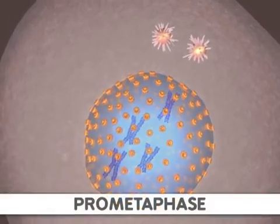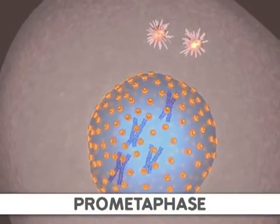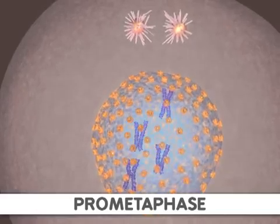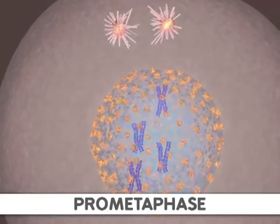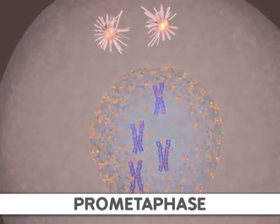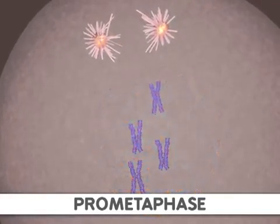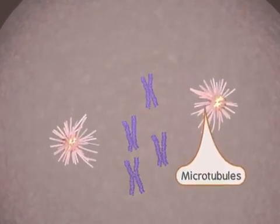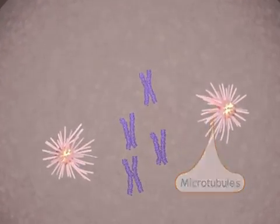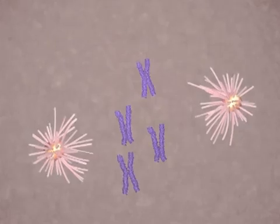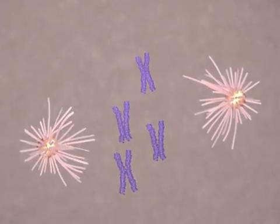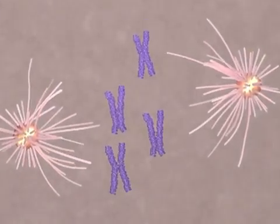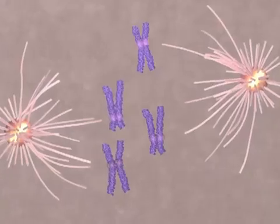Next, prometaphase begins when the nuclear membrane is broken down. At the same time, microtubule strands, or spindle fibers, are growing from the centrosomes. These strands attach to a protein structure called the kinetochore. One kinetochore is attached to the centromere of each sister chromatid.